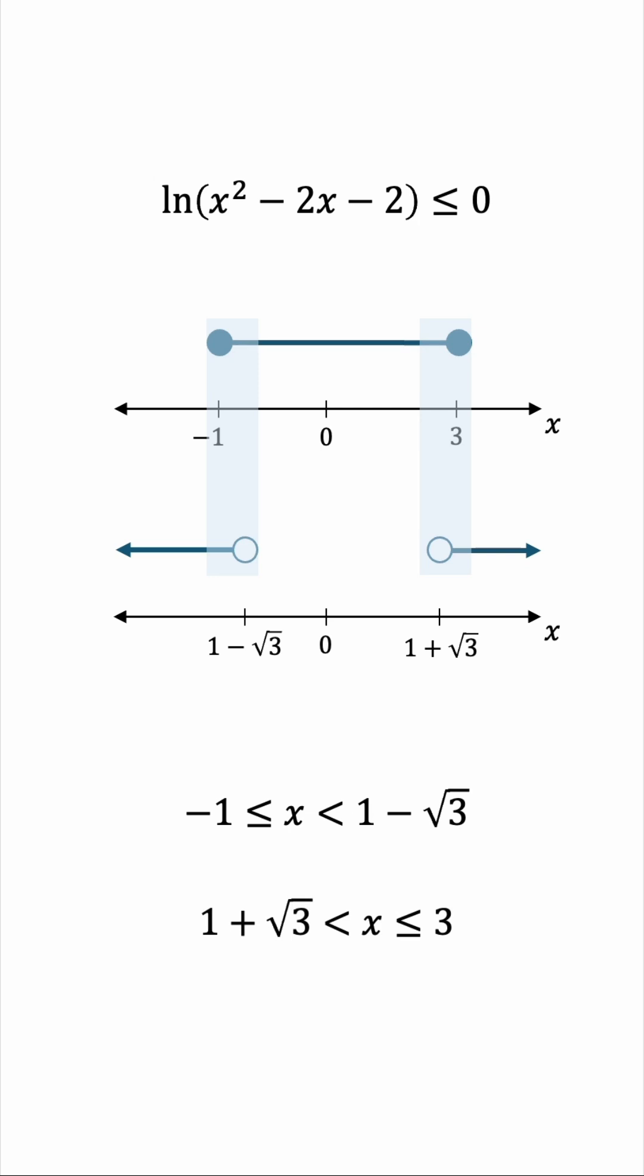In interval notation, we would express the answer as the following, where a square bracket indicates that the boundary is included, and a round bracket indicates that the boundary is excluded.